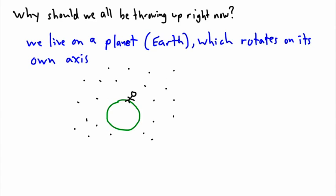What happens is our own planet rotates. If this here is north, then it rotates like this. If this is east and this is west and this is north and this is south, then the stars appear to rise from the east and set in the west. The first reason why we should feel like we're throwing up is because we live on a planet which rotates on its own axis once every 24 hours.